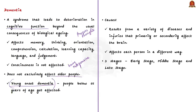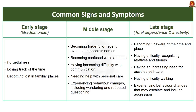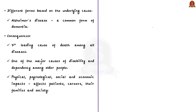What causes dementia? Dementia results from a variety of diseases and injuries that primarily or secondarily affect the brain — even a stroke can cause dementia. Dementia affects each person differently depending on the underlying causes. The signs and symptoms can be understood in three stages: early stage, middle stage, and late stage. Please refer to the provided details for each stage — it will be very helpful for your preliminary examination.